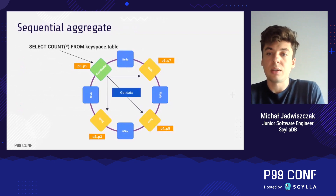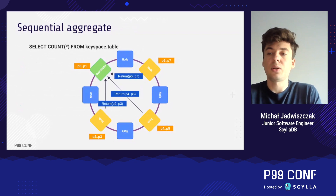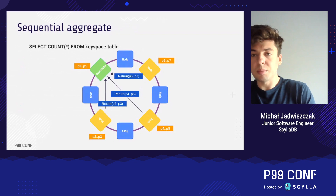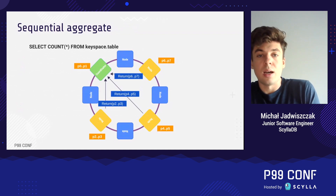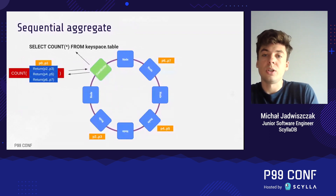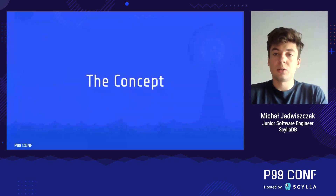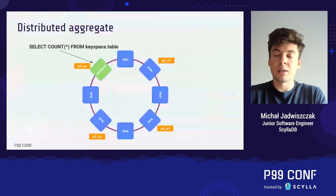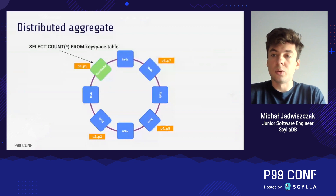Here's an example of the current aggregation execution. The client wants to count how many rows a particular table contains. The request starts when the coordinator receives the query. After parsing it, the coordinator requests all required data from the other nodes that hold it. Each node reads the data from disk and sends it back to the coordinator. At the end, the coordinator iterates over the whole dataset, calculates the aggregate, and responds to the client.